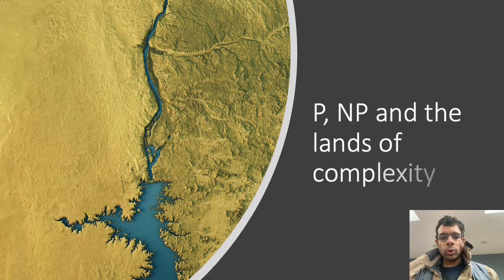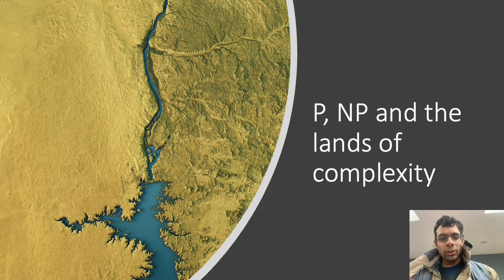There's a famous P equals NP conjecture in computer science with a million dollar bounty on its head. Let's dive into what it means and try to do it in a way that the concepts stick.